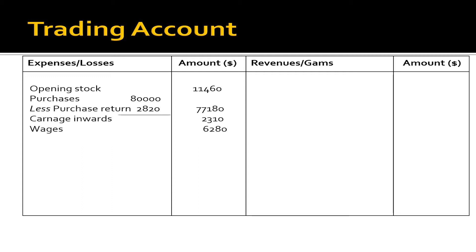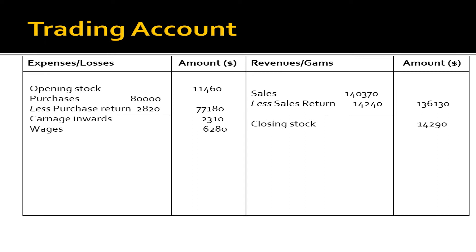Moving to the credit side of the trading account: sales $1,40,370 less sales returns $4,240, giving net sales of $1,36,130; and closing stock $14,290. Balancing both sides, the debit side is falling short by $53,190 — that is our gross profit. Gross profit will be brought forward to the credit side of the P&L account.